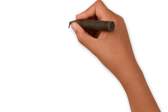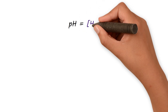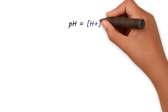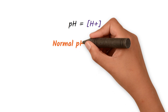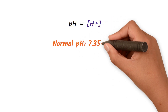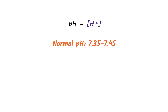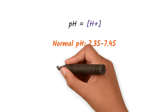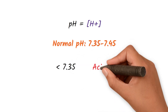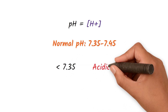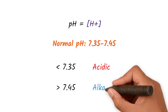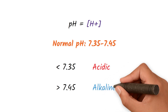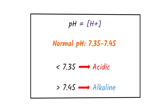pH refers to the concentration of hydrogen ions in the blood. The normal pH of blood is between 7.35 and 7.45. A blood pH of less than 7.35 is considered acidic, while a blood pH of more than 7.45 is considered alkaline.